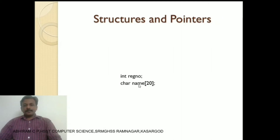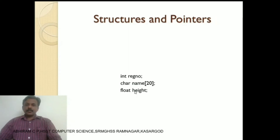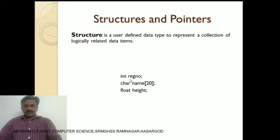Then name is represented using char type — a character array. Then height is represented using float type, which is used to represent fractional numbers. To represent this grouped data, C++ provides a facility to define new data types called user-defined data types. Structure is such a user-defined data type.